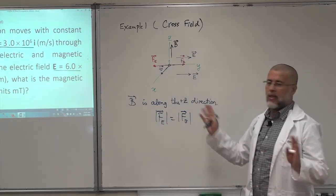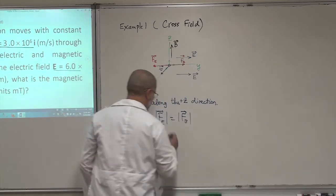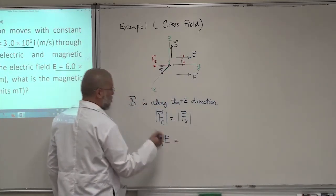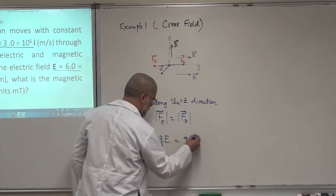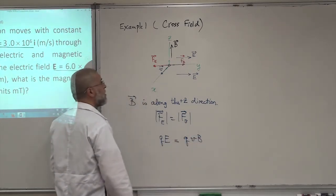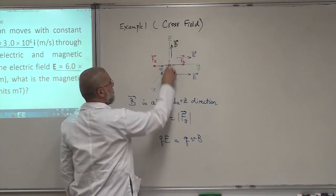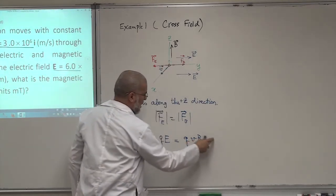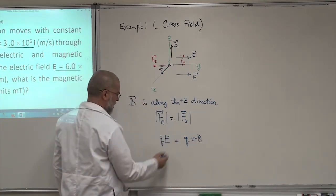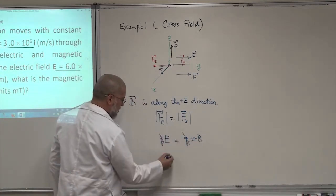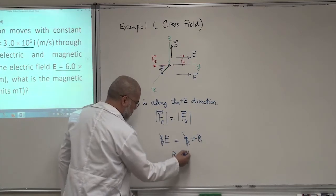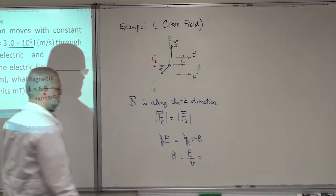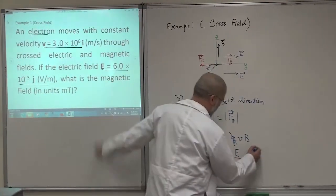Now to find its magnitude, it's very simple. You just have to write that FE in magnitude should be equal to FB in magnitude. This is QE, where E is the charge of the electron. And this is QVB magnitude. You see that V and B are perpendicular, so the angle between them is 90. And sine of 90 is 1, so I just take it out. So then B will be E over V. Now you just have to put the numbers. The magnitude of E is 6 times 10^3 volt per meter.